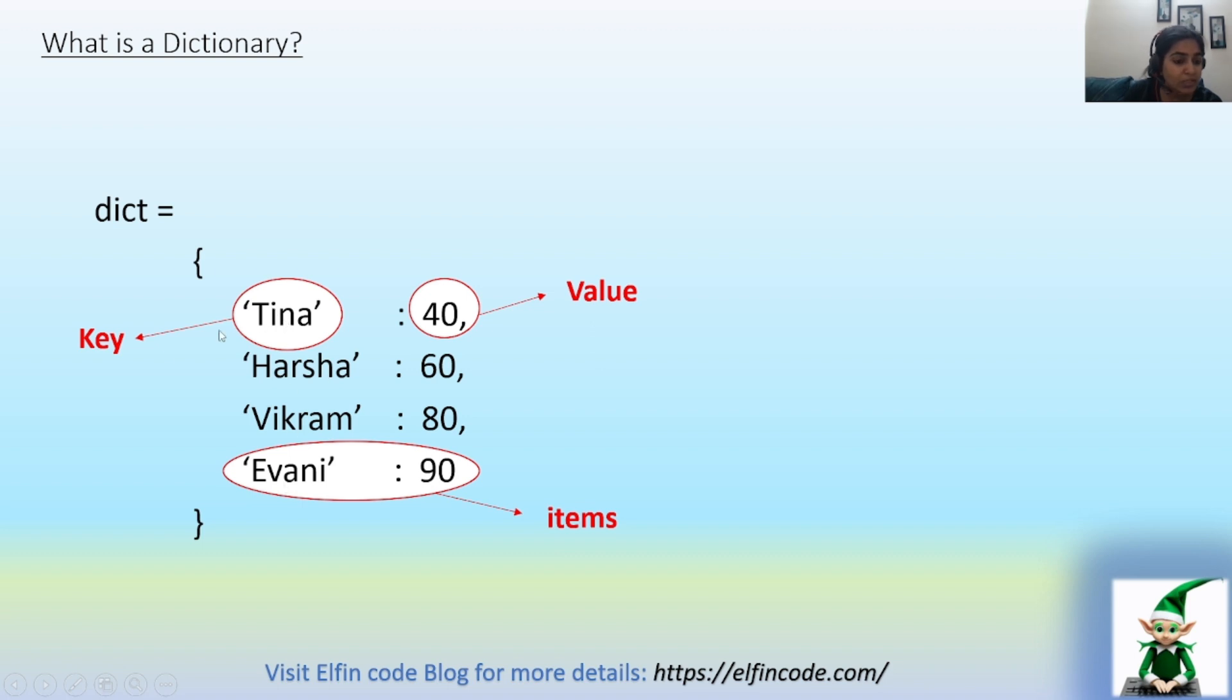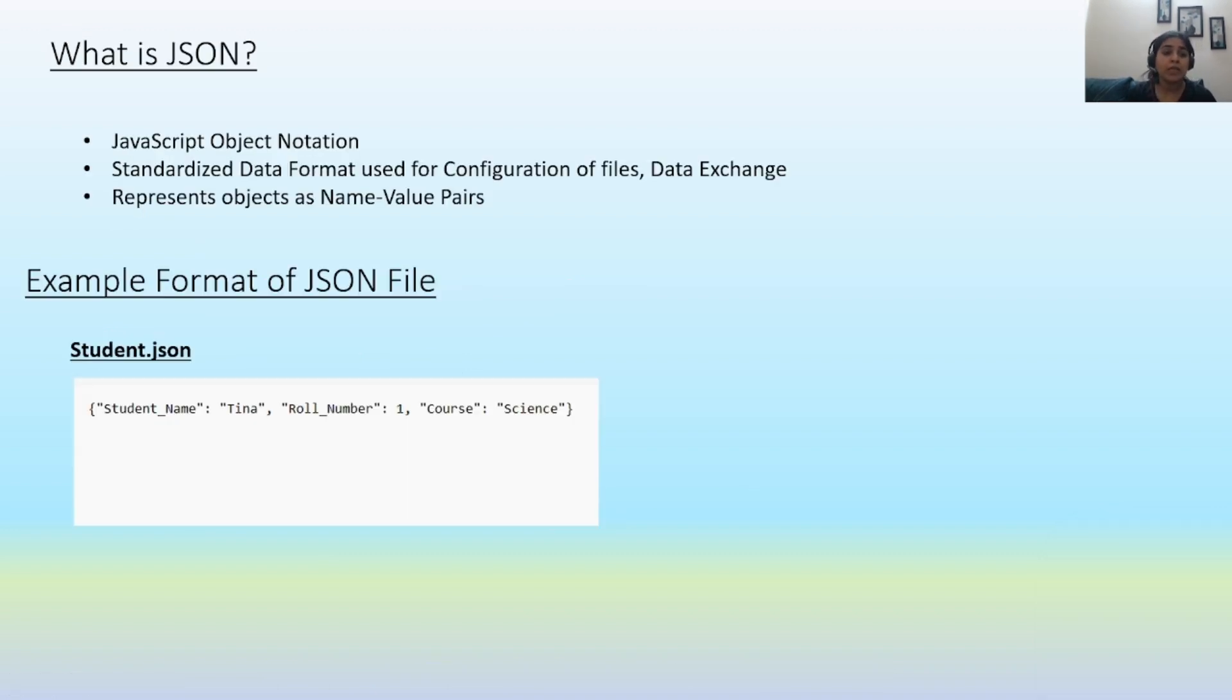These are the names of the students, which is the key of this dictionary, and the values of these keys are nothing but the marks of the students. So this is the generic format of a dictionary.